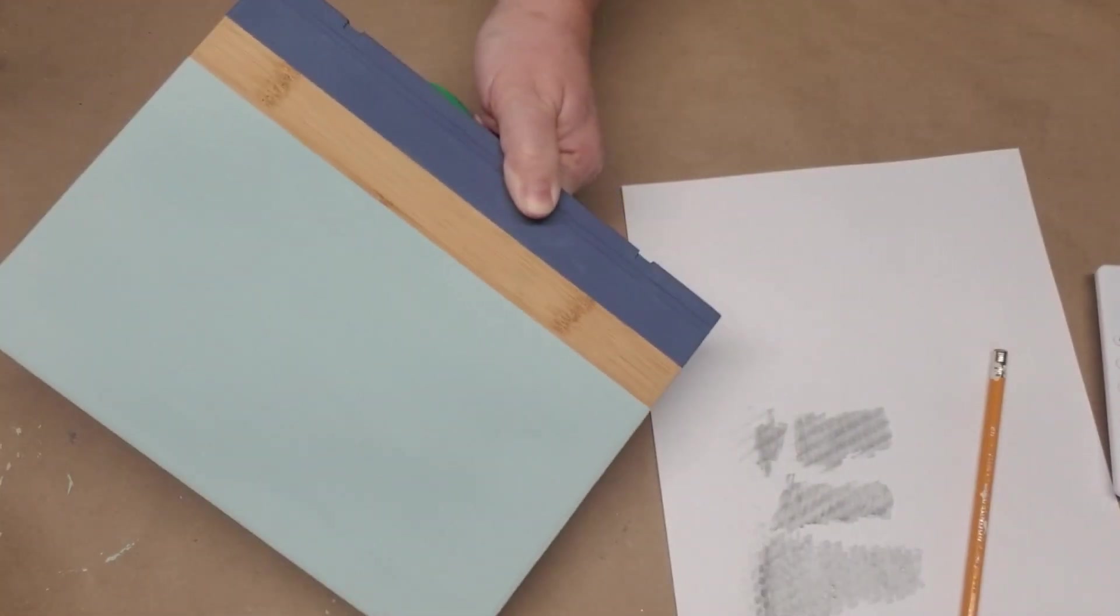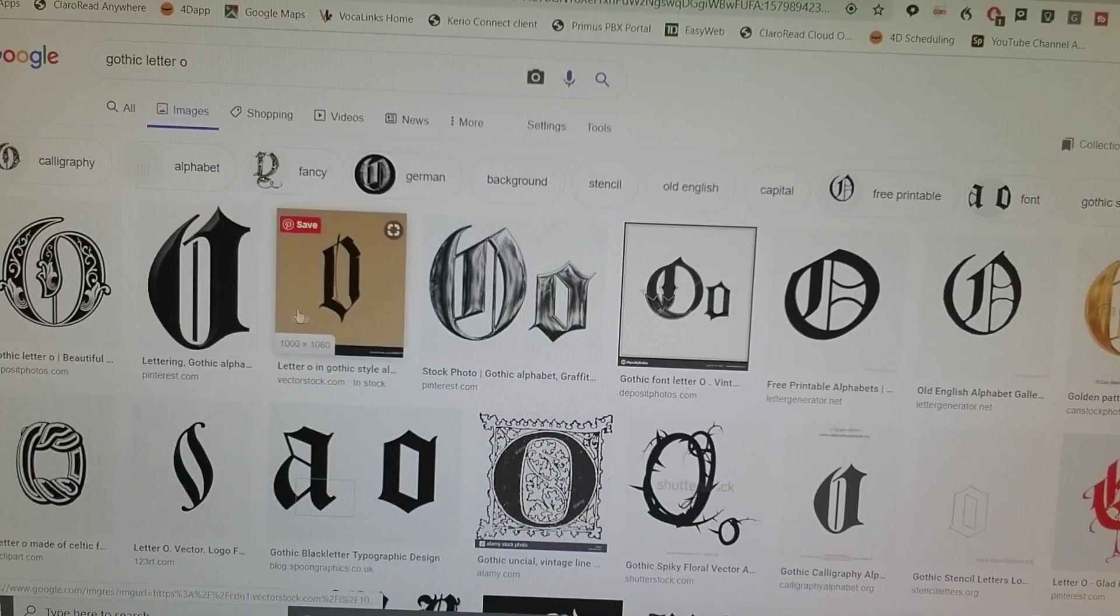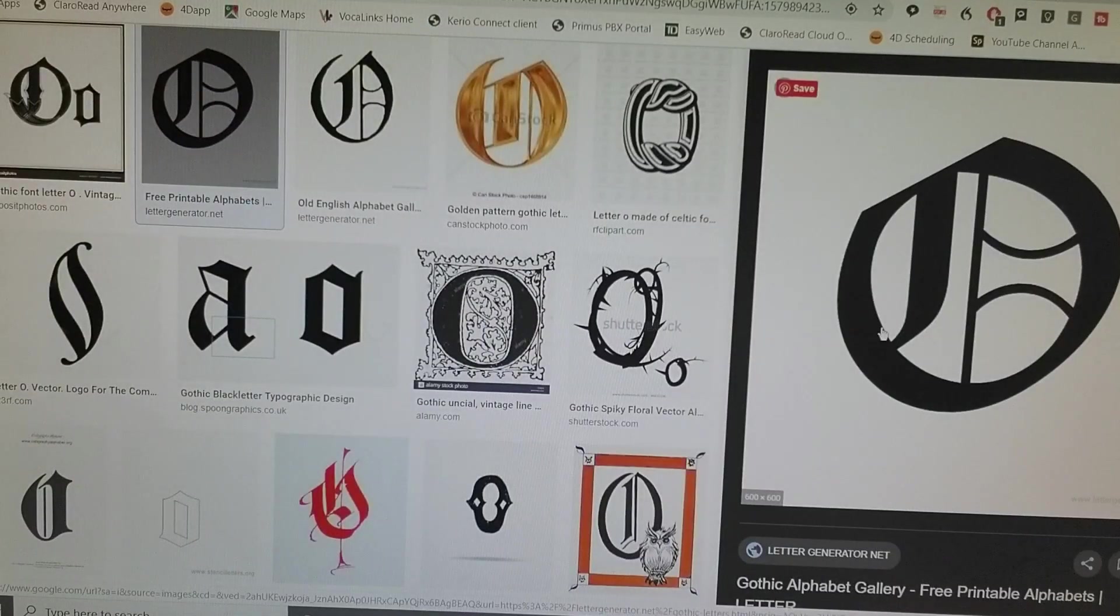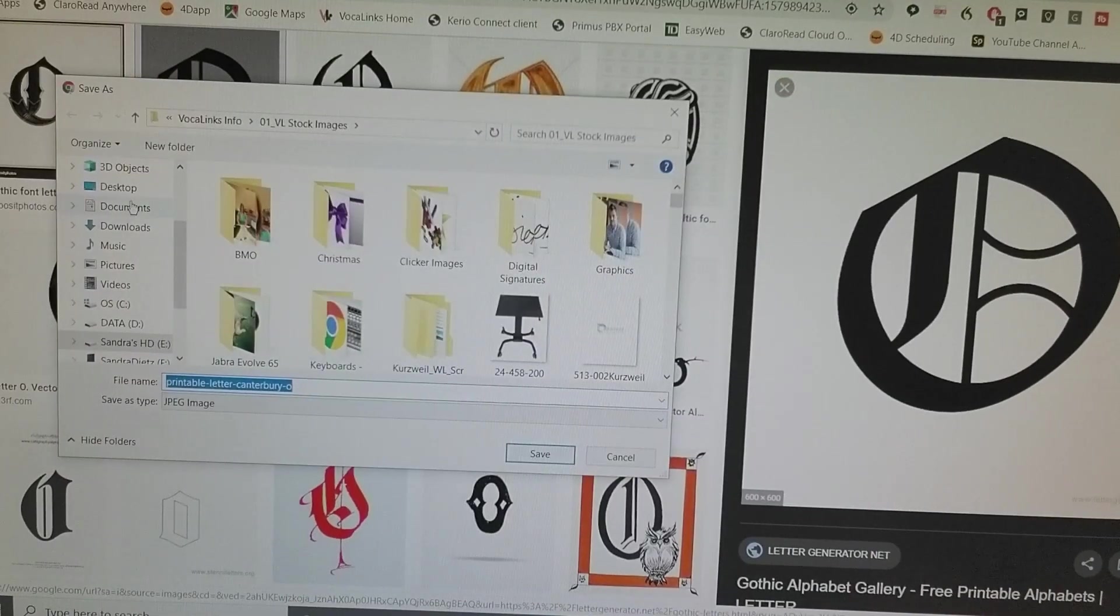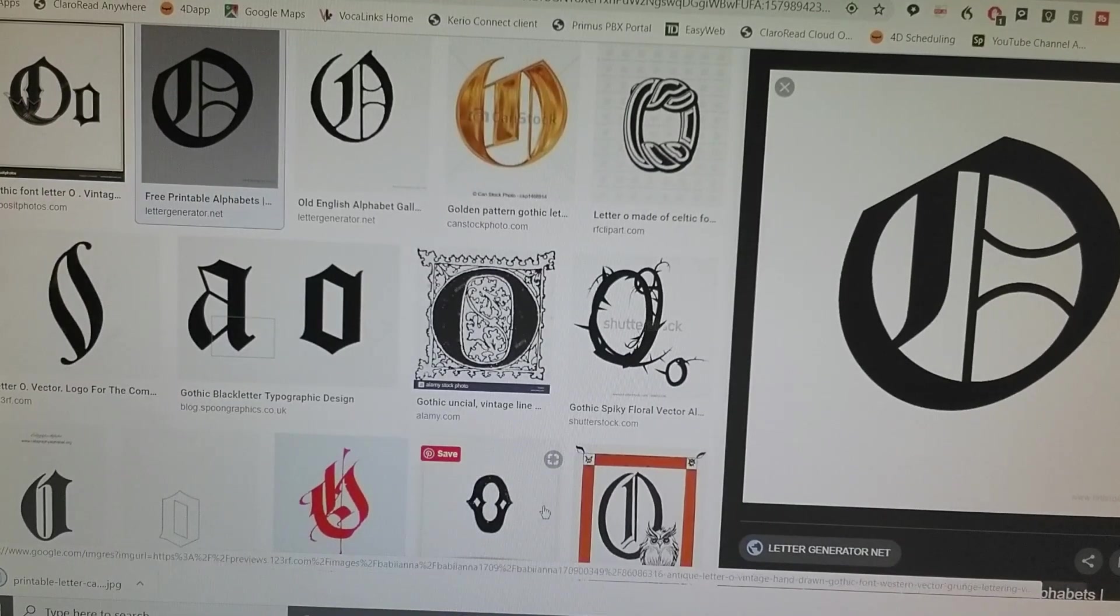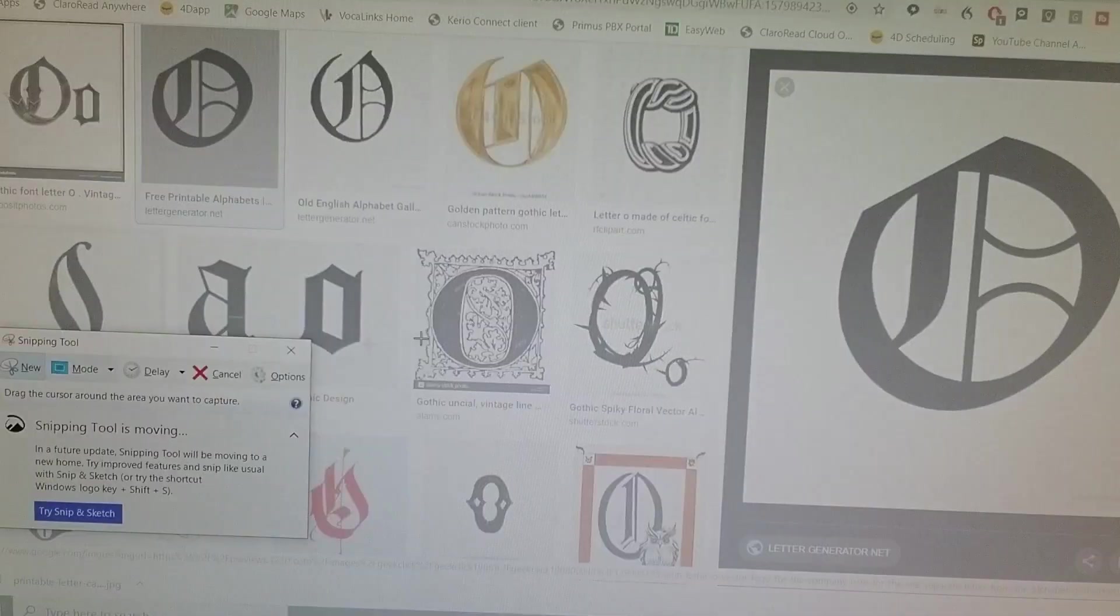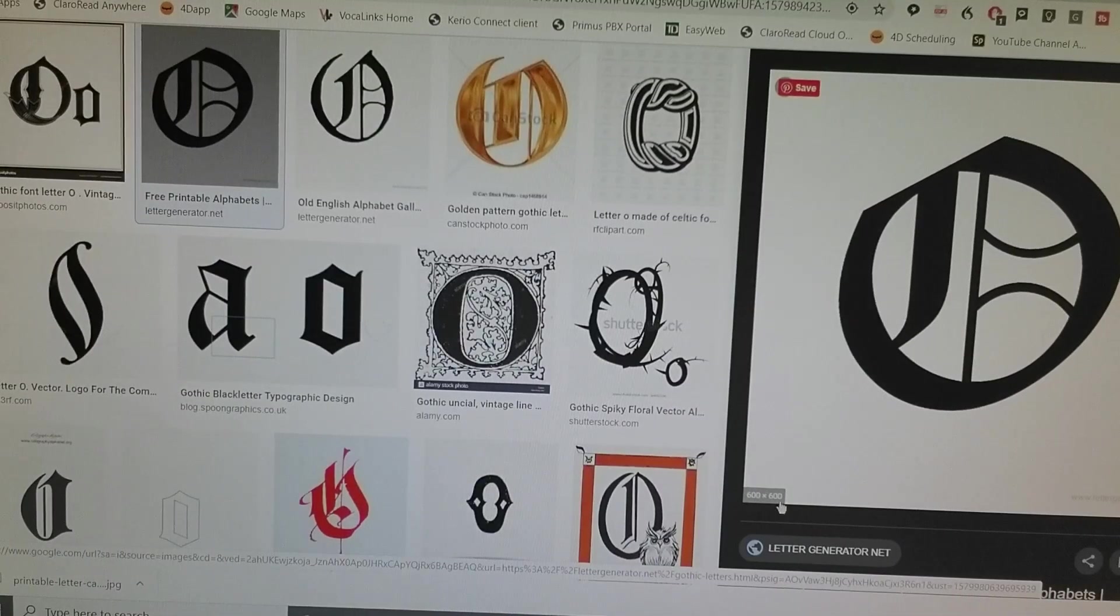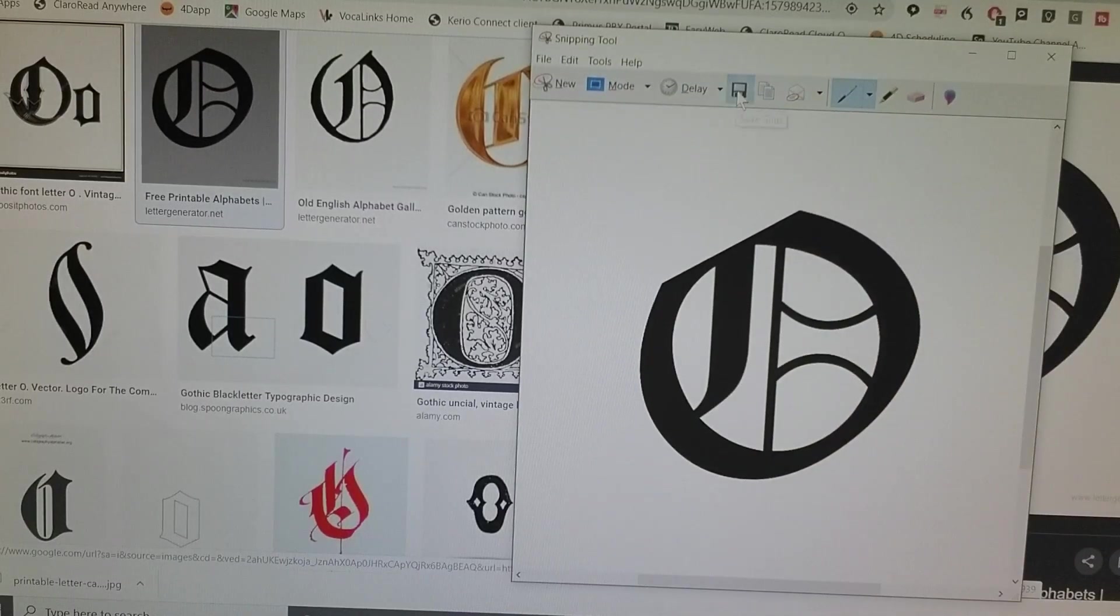Here I'm on my computer and I've gone into the internet into the images for the search words 'gothic letter O.' I want to use a large O for the words 'once upon a time' that I want to put on top of the book. So I'm going to find a printable letter O and then I've just saved it to my computer. If you can't save it, you could always use a little snip tool or take a screenshot and then crop out the letter and then save it onto your computer.